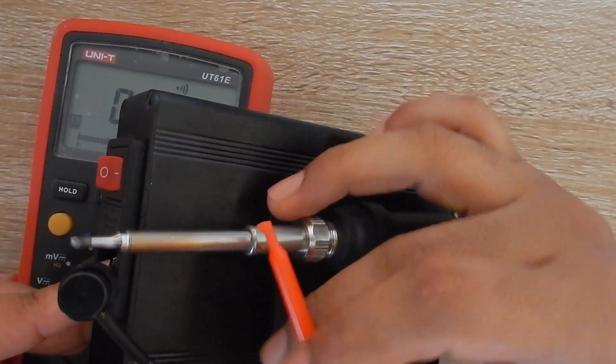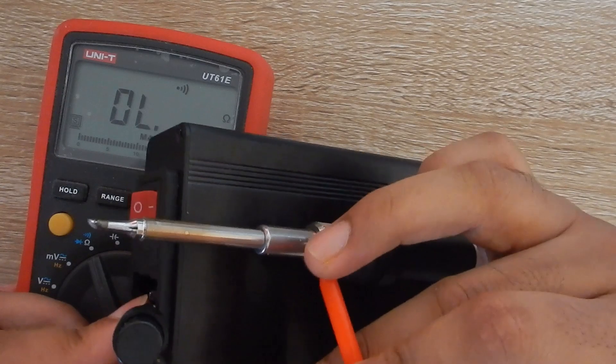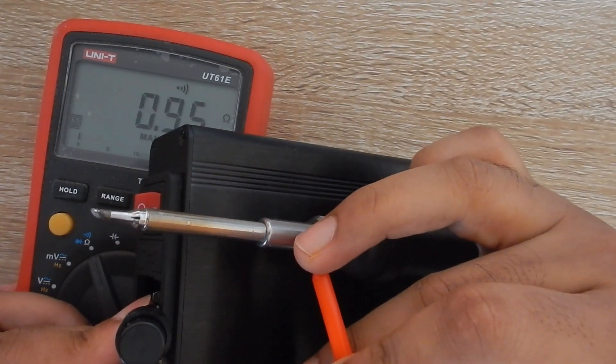The tip is earthed properly. It is very important for soldering low voltage SMD stuff otherwise the thing can damage your chips.